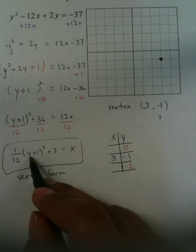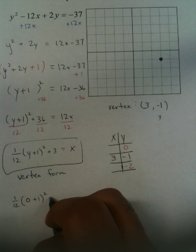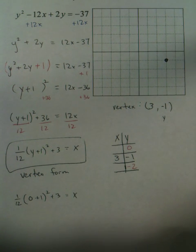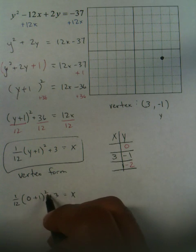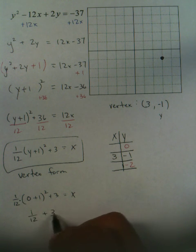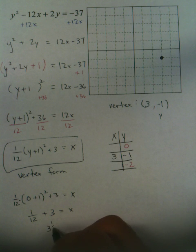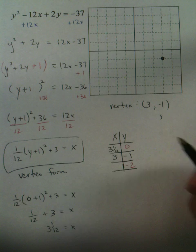So, take this 0, put it in for Y. 1 twelfth, 0 plus 1, squared plus 3. You're going to make these calculations. They're pretty much easy in your head. 0 plus 1, plain old 1, power of 2, still 1. Times it by this. You don't have to work tremendously hard. So, 3 and 1 twelfths is equal to X.